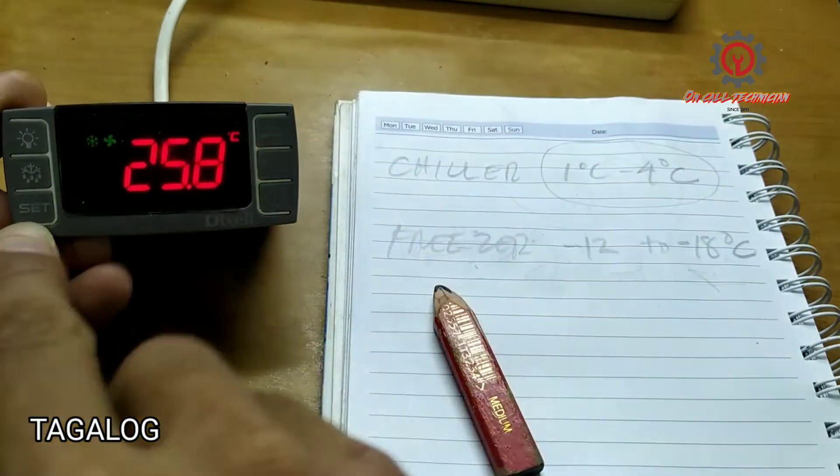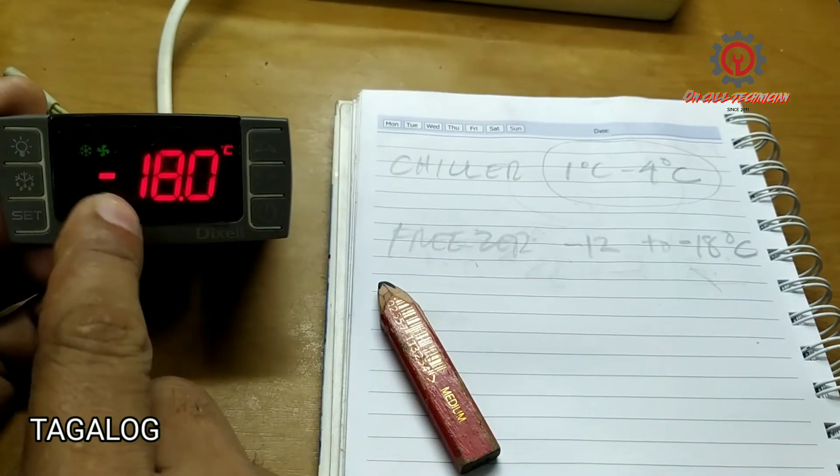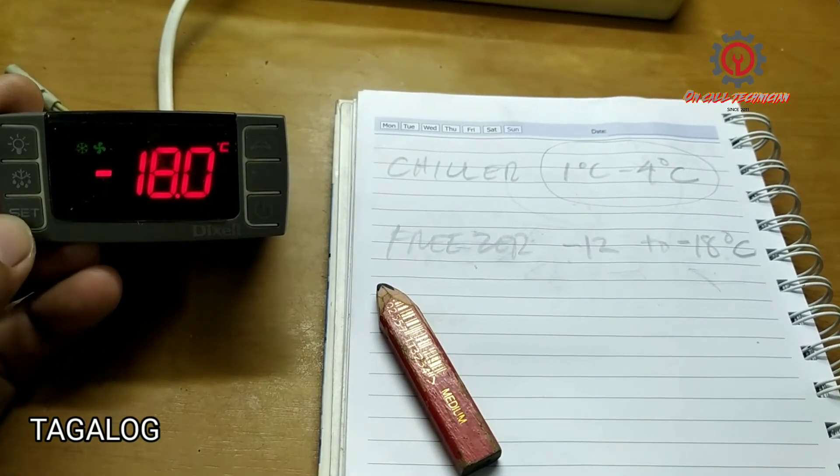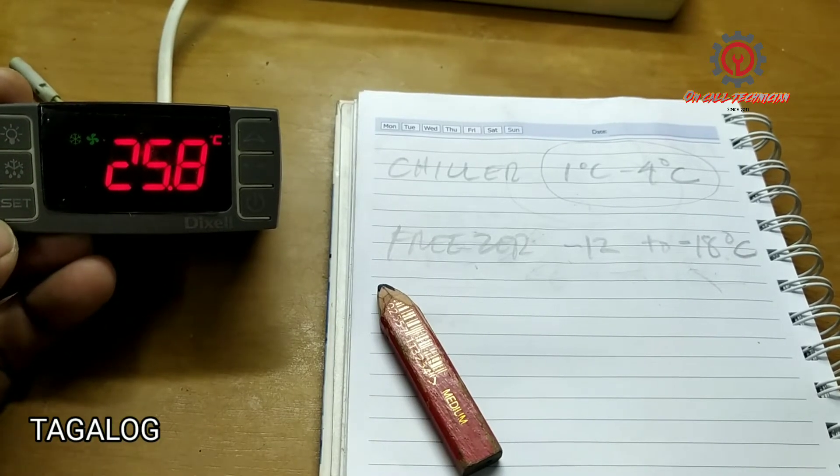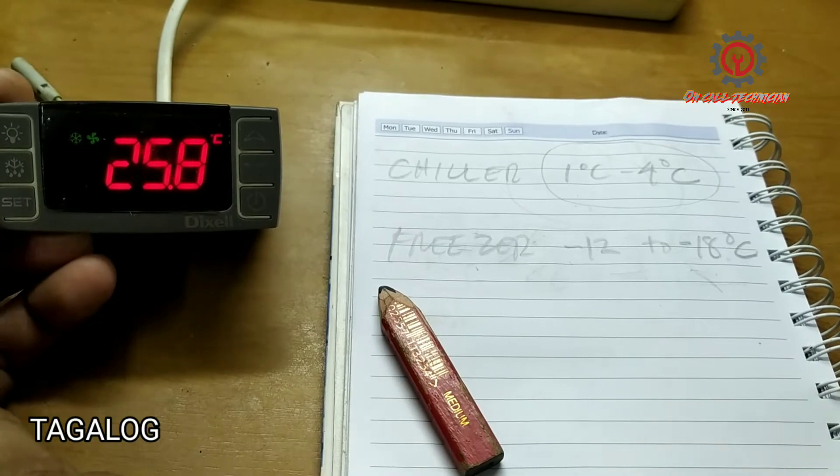Ngayon papakita ko sa inyo sa pagpindot ng set button is negative 18, meaning ito ay freezer. I-click ko lang ulit yung set at i-access ko ulit yung setpoint para ma-access natin.